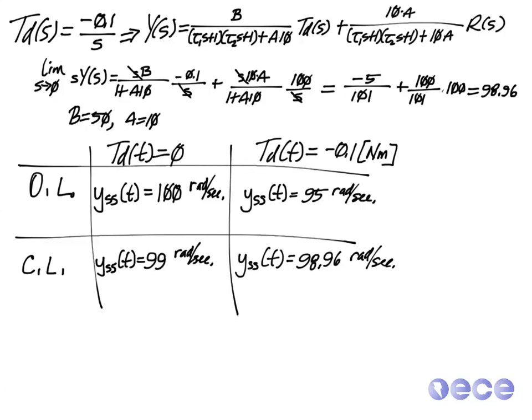Whereas our steady state error is 1.04%. So with 0 disturbance we have a 1% steady state error, and with a small disturbance we have 1.04% steady state error.